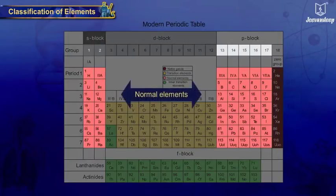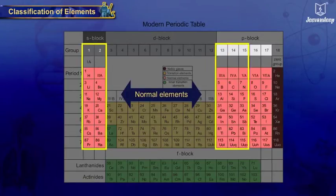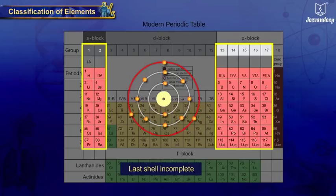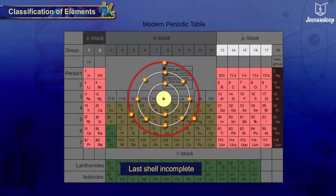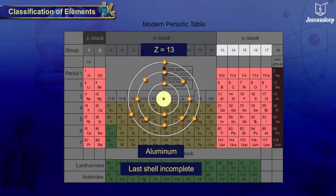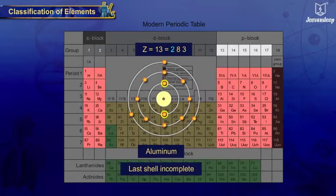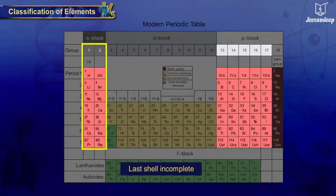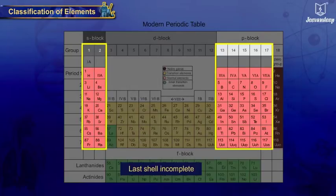Second type: normal elements. This type includes the first, second, and 13th to 17th groups. For these elements, only the outermost shell is incomplete — that is, they do not have eight electrons in their outermost shell. Example: aluminium, Z equals 13, electronic configuration 2, 8, 3. Here the two inner shells are complete with two and eight electrons, but the outermost shell has five fewer than eight electrons.